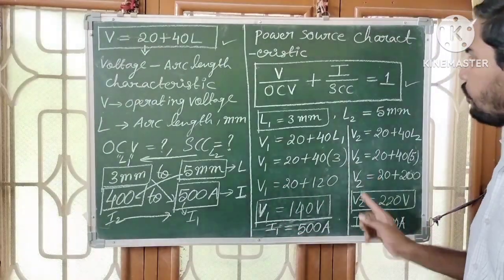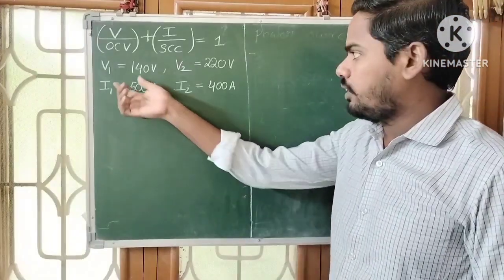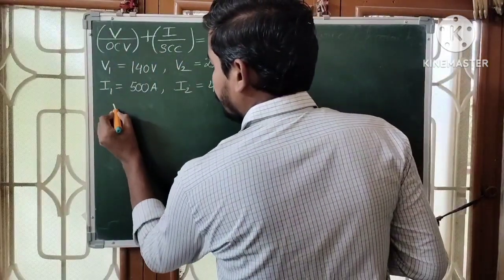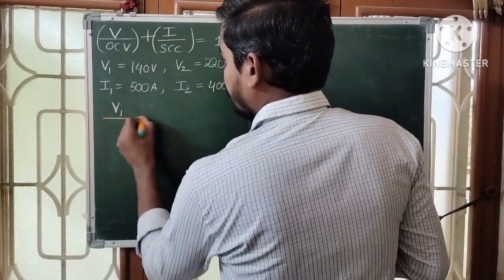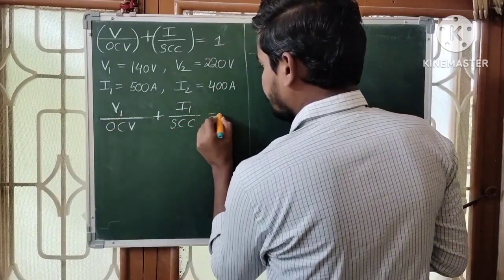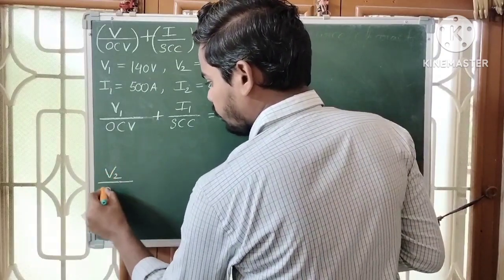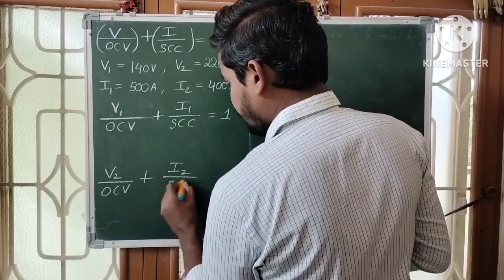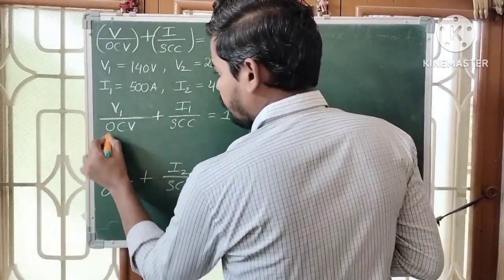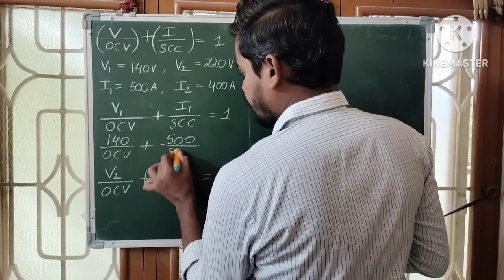Using V1, I1 and V2, I2 with the power source characteristic equation, we can find OCV and SCC. Substituting V1 and I1: 140/OCV + 500/SCC = 1 — call this equation 1.